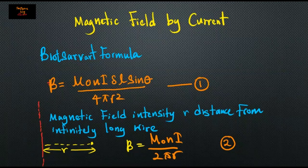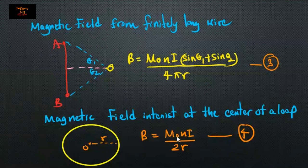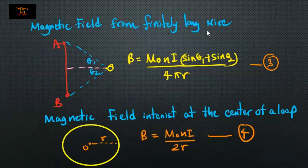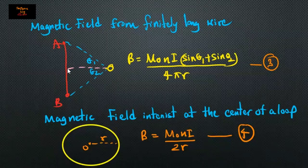Moving into the third equation — magnetic field from a finitely long wire. Here, magnetic flux density B equals mu-naught n I times (sine-theta-one plus sine-theta-two) divided by four-pi r. Here, I is the current, theta-one and theta-two are the angles, and r is the distance from the wire.